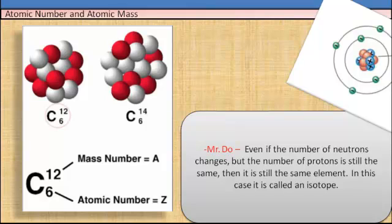Even if the number of neutrons changes but the number of protons is still the same, then it is still the same element. In this case, it is called an isotope.